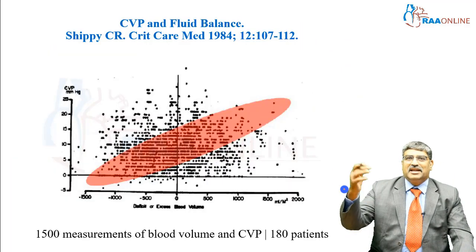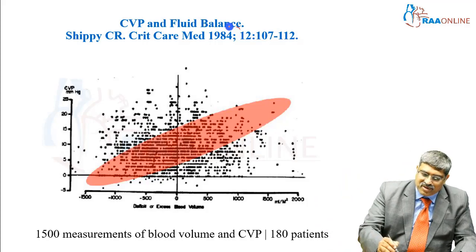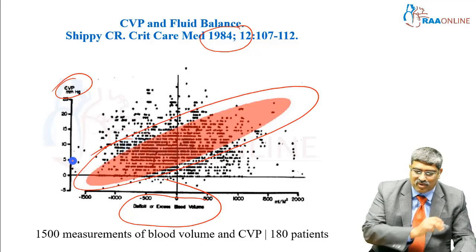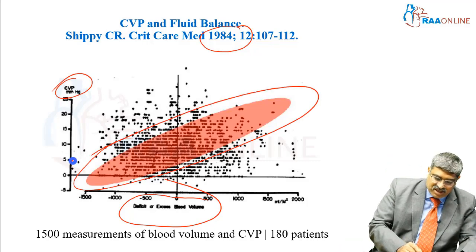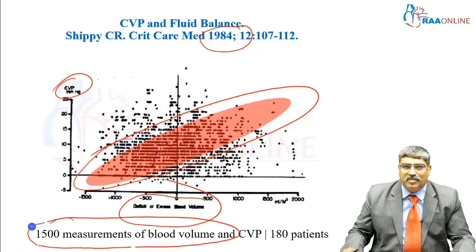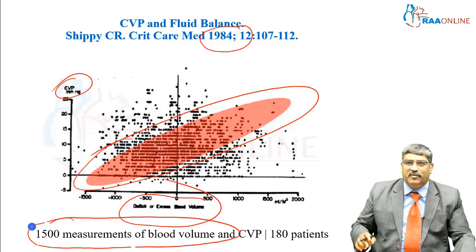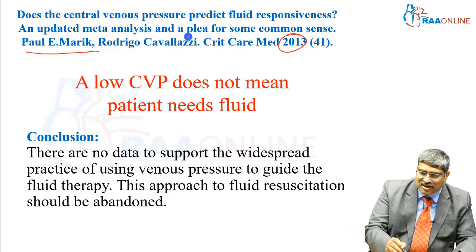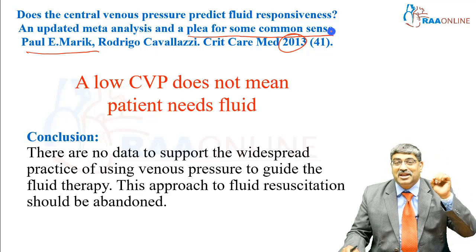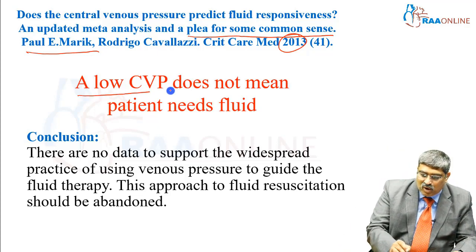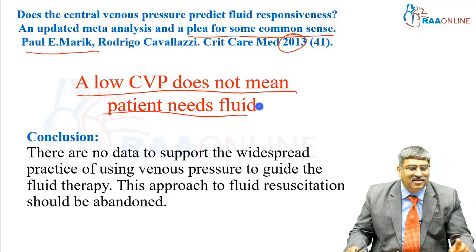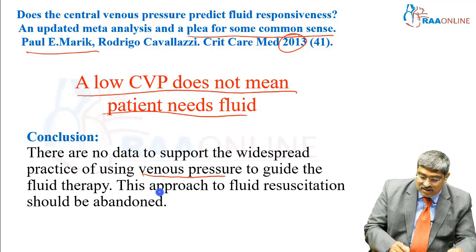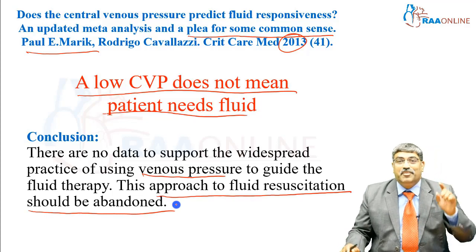If blood pressure does not reflect cardiac output, then what is the next pressure you think will reflect it? A study done 40 years ago looked at blood volume and CVP — again, there was not much correlation with cardiac output. Another study of 180 patients with about 1500 measurements concluded that CVP does not correlate with cardiac output. In 2013, Paul Murray made a very direct statement: there should be some common sense for using CVP to monitor volume. A low CVP does not mean your patient needs fluid. There is no data to support the practice of using venous pressure to guide fluid, and the approach to fluid resuscitation using CVP should be abandoned.